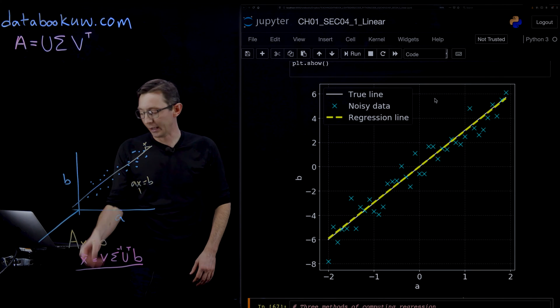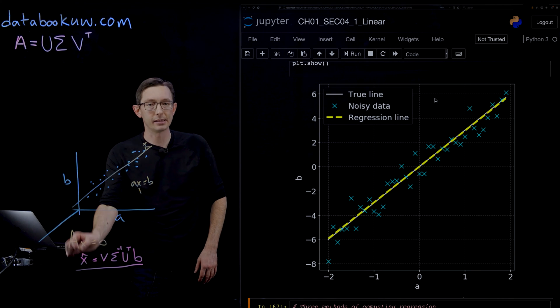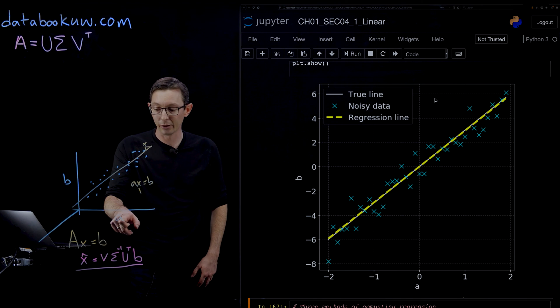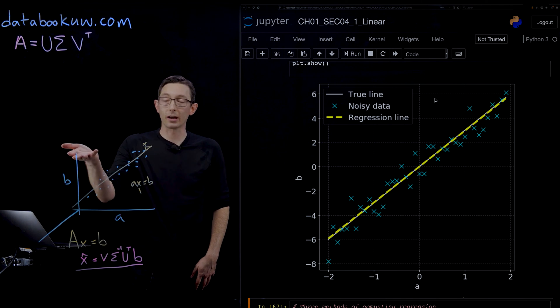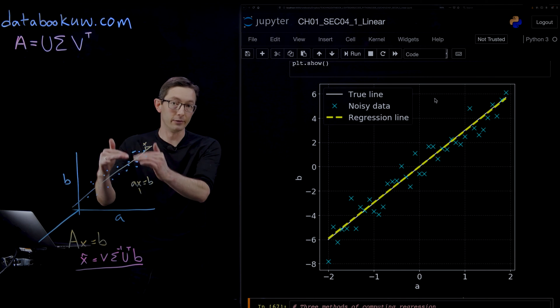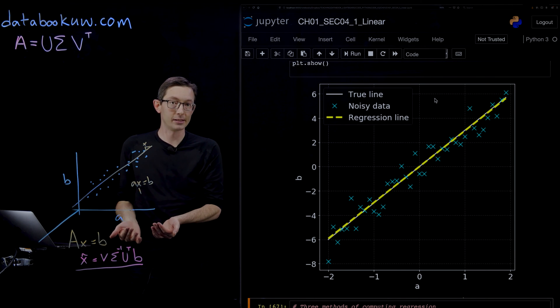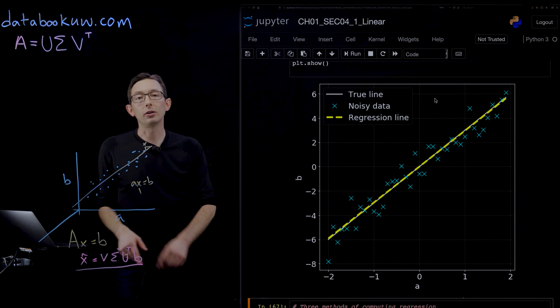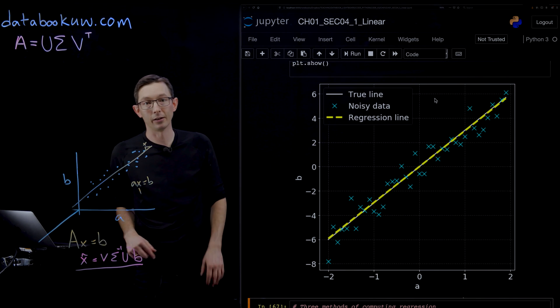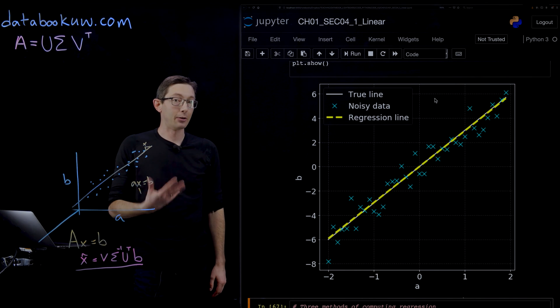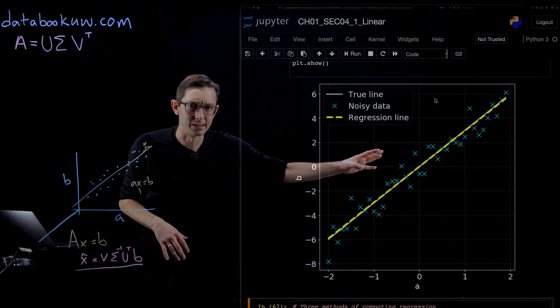You can do that by collecting these measurements in column vectors of A of those input factors and measurements in this column vector of B of the outcome risk for a number of individual patients. Those would be the rows of this equation and you would solve for the best fit slope X of that model using the pseudo inverse of the A matrix times the outcome vector B.